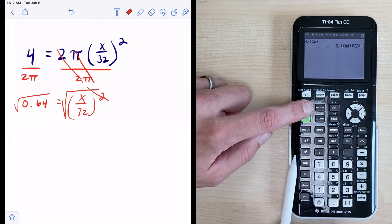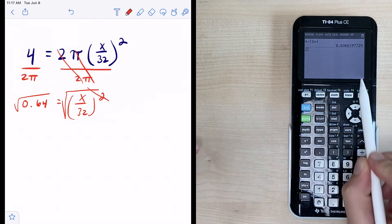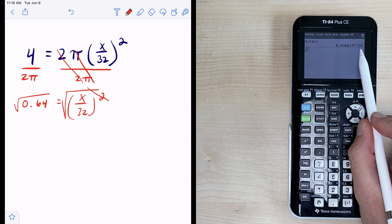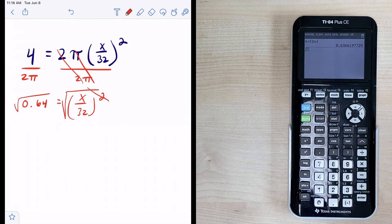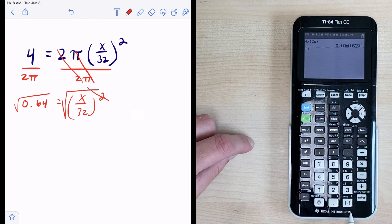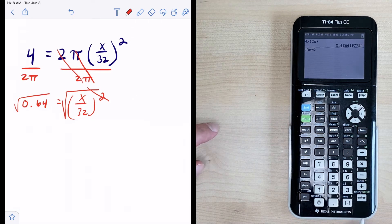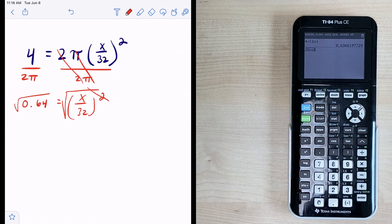So to utilize that we have to hit second square root and I could type in the decimal that I see on my screen but this extends forever right it's an irrational number. So what I can do is utilize previous answer. So I can hit second and the negative key and now it says I'm going to take the square root of my previous answer.